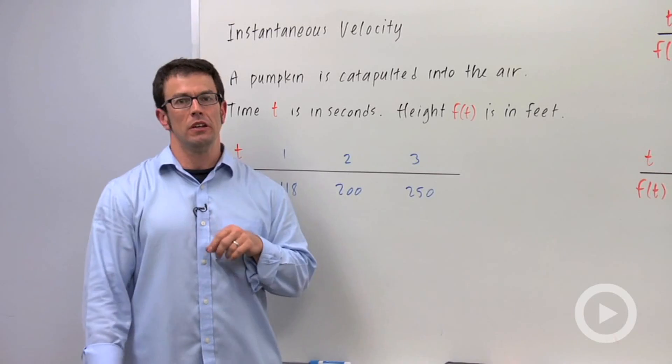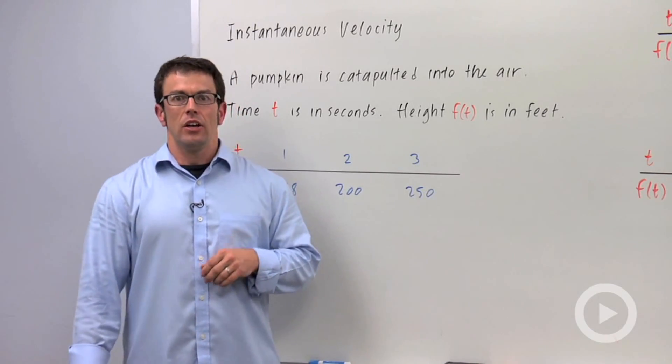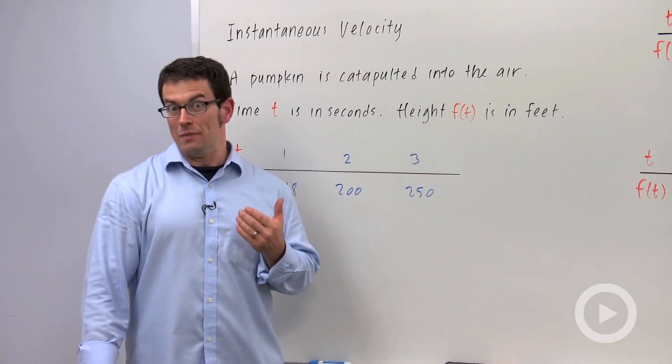Let's say you're on a road trip, you drive 300 miles and it takes you five hours. Your average speed is 300 miles divided by five hours or 60 miles per hour.